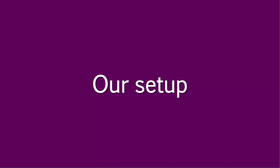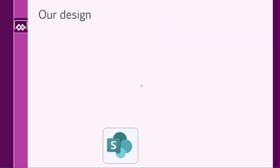Let's quickly discuss the setup for this video. We have a SharePoint list and Power Apps. The request is created by the user inside the SharePoint list. The user can review and edit the request, and then submit it for approval to Power Automate — though we won't get into the Power Automate part. Let's quickly visualize it so we're all on the same page.